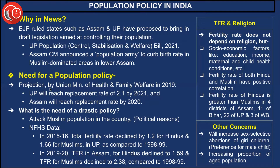The projection by the Union Minister of Health and Family Welfare in 2019 stated that Uttar Pradesh will reach a replacement rate of 2.1 by 2021, and Assam will reach the replacement rate by 2020, indicating that population growth in these states is already declining fast.